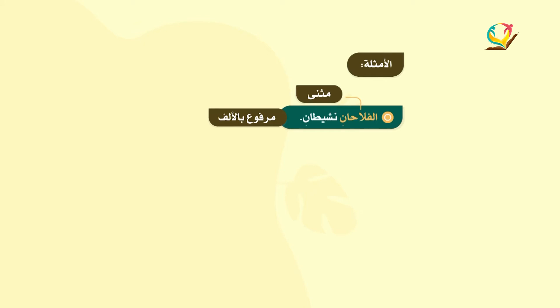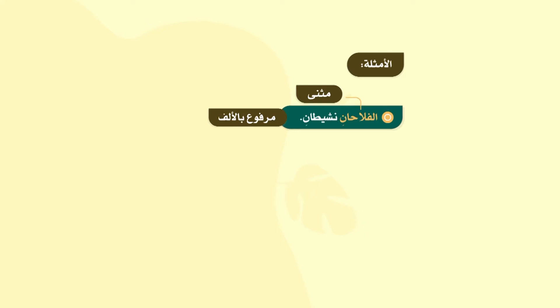والمثنى يُعرَب بالحروف، فيُرفع بالألف. فما إعراب كلمة الفلاحان؟ مبتدأ مرفوع وعلامة رفعه الألف لأنه مثنى.